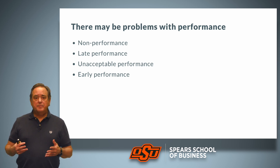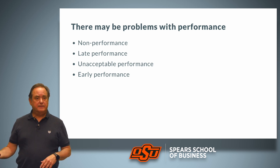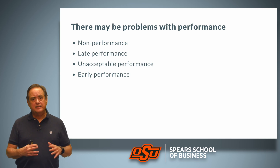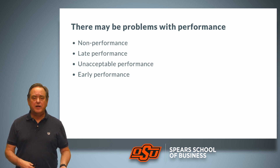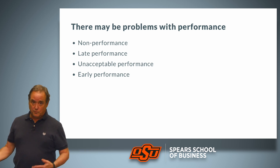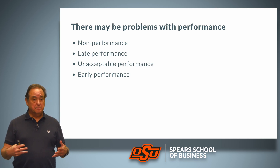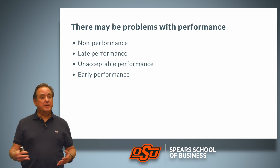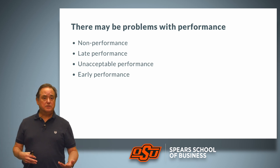Unacceptable performance means something less than non-performance. For a seller, it means shipping goods that do not conform with the contract. For a buyer, it means partial payment — not paying for the goods as you were supposed to.